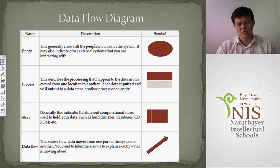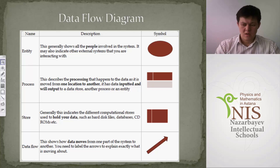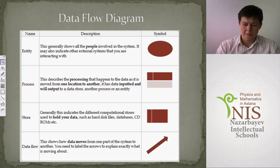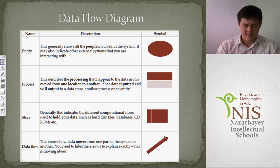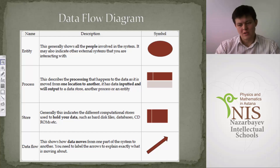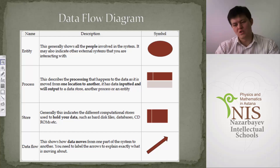If data flows are not labeled, you can never understand what happens in the process and what kind of data flows around the system — it means the student has no clear idea. Also, DFD has specific rules: only processes can interact with each other directly. Other symbols like entities and data stores should interact only through a process — you cannot go directly from an external entity to a data store.